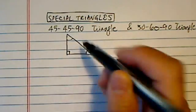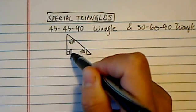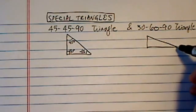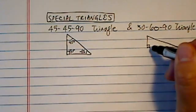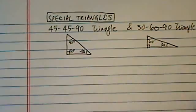45-45-90 is one of them. And then the other one is a special one, it's 30-60-90. So here's my ninety here, and the small one is a thirty, and here's the sixty degrees.